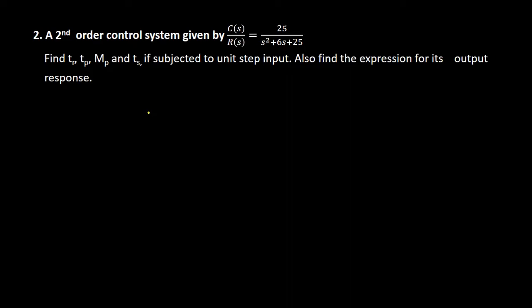The question is: a second order control system given by C(s)/R(s) is equal to 25 divided by s squared plus 6s plus 25. Find the rise time tr, peak time tp, maximum overshoot mp, and settling time ts if subjected to unit step input, and also find the expression for its output response.